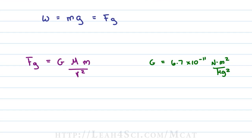Big M is the mass of the planet in question, little m is the object on that planet and r squared is the square of the distance between them from the center of the object to the center of the planet.